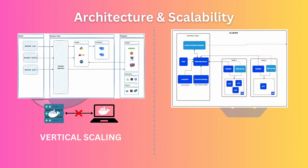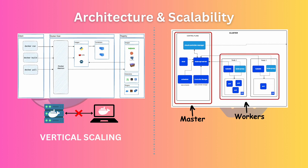Kubernetes has a master-worker architecture. The master node is responsible for managing the cluster. It includes components like the API server, controller manager, scheduler, and many more. Basically, it does the administrative tasks of maintaining your cluster. Worker nodes are the machines that actually run container workloads. They receive instructions from the master about what containers to run or stop. Workers have a container runtime like Docker or containerd, as well as kubelet that communicates with the master, kube-proxy, and some other components. Because you can add more workers to a Kubernetes cluster, you can scale out your application horizontally by deploying more containers on more machines.